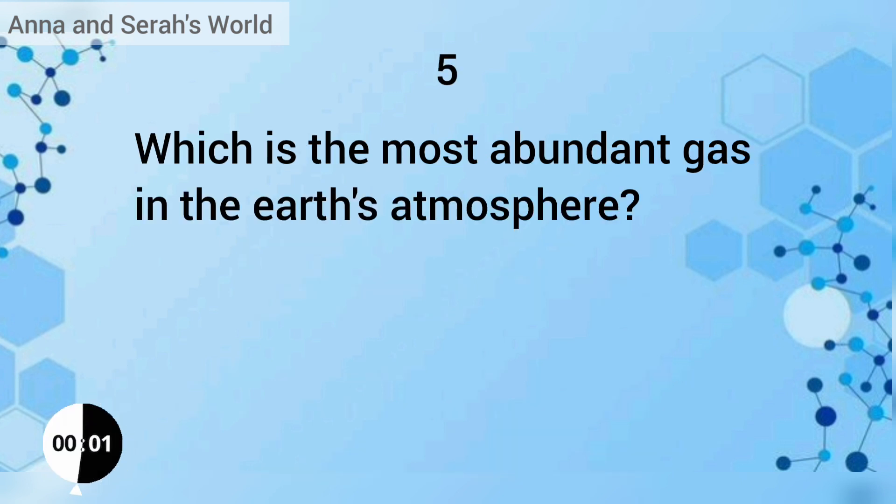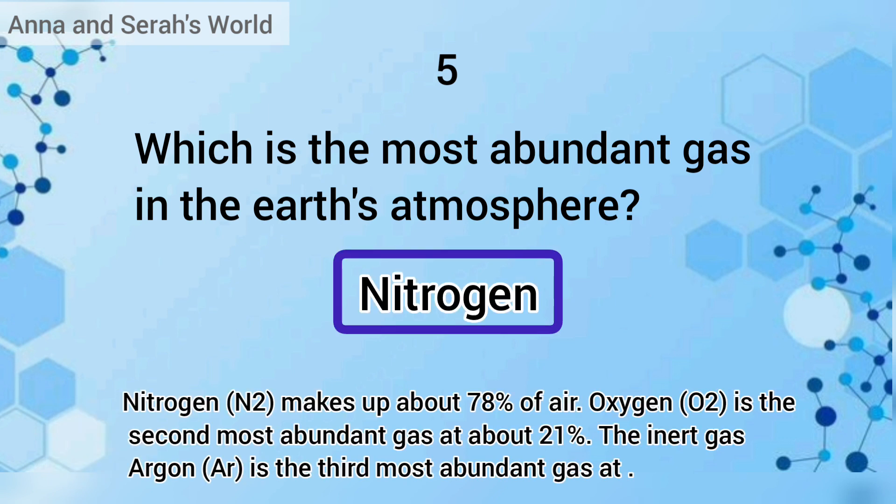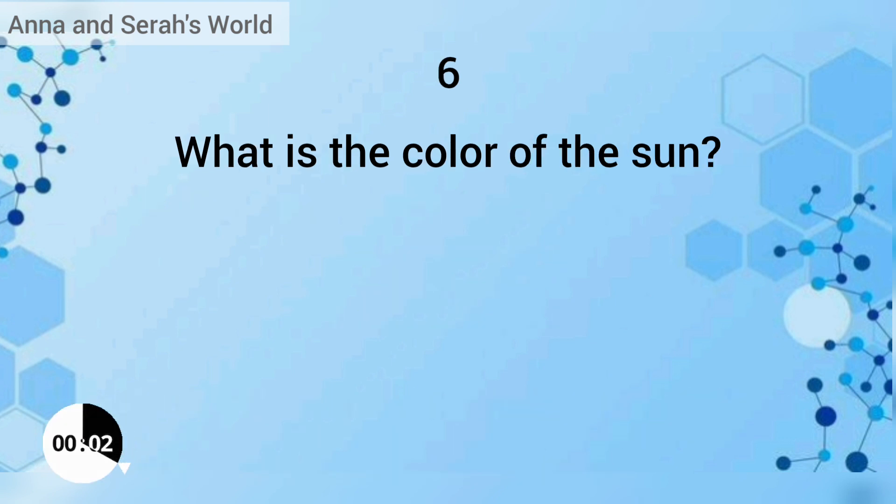Which is the most abundant gas in the Earth's atmosphere? The answer is nitrogen. What is the color of the Sun? The answer is white.